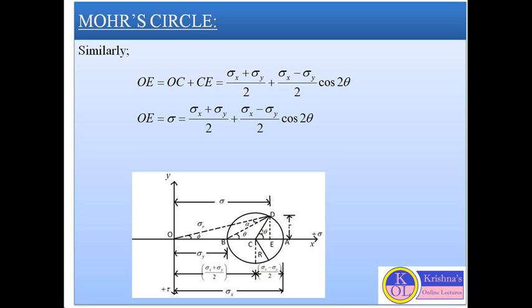From the stress circle, shear stress is maximum when angle 2θ equals 90°, i.e., θ equals 45°. Substituting this value, we get the maximum shear stress equal to (sigma x − sigma y)/2. The shear stress is above the axis so it is negative, meaning it acts in the clockwise direction on the stress system. The resultant stress is represented by OD (sigma r) and it makes an angle phi with the direction of normal stress sigma. This completes Mohr's circle for two like stresses.